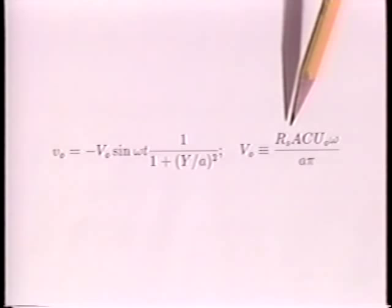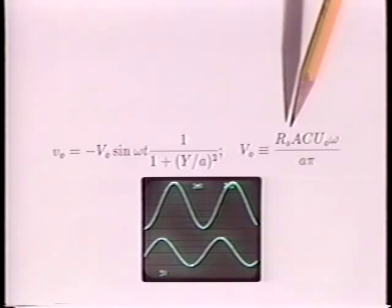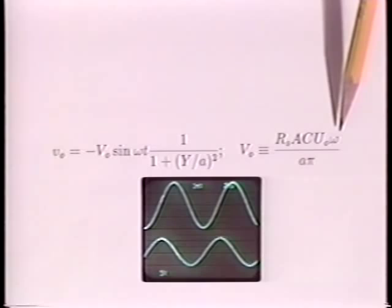We can see our approximation get into trouble by raising the frequency. Our formula says that the voltage should be proportional to the frequency. As the frequency is raised from 100 hertz to 200 hertz, the voltage does indeed essentially double, as the equation suggests.